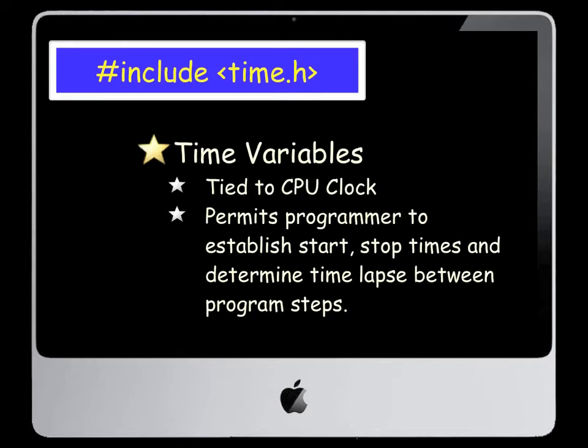We'll also have occasion to use, for more advanced programming, time.h, which allows us to create time variables tied to the CPU clock. This in turn permits the programmer to establish a start or stop time and then determine the time lapse between key program steps. We might want to use this when investigating how efficient a particular algorithm is, and probably the greatest advantage is being able to compare two algorithms for efficiency. We might use this in our prime number program for those who get to the more advanced levels of that requirement.